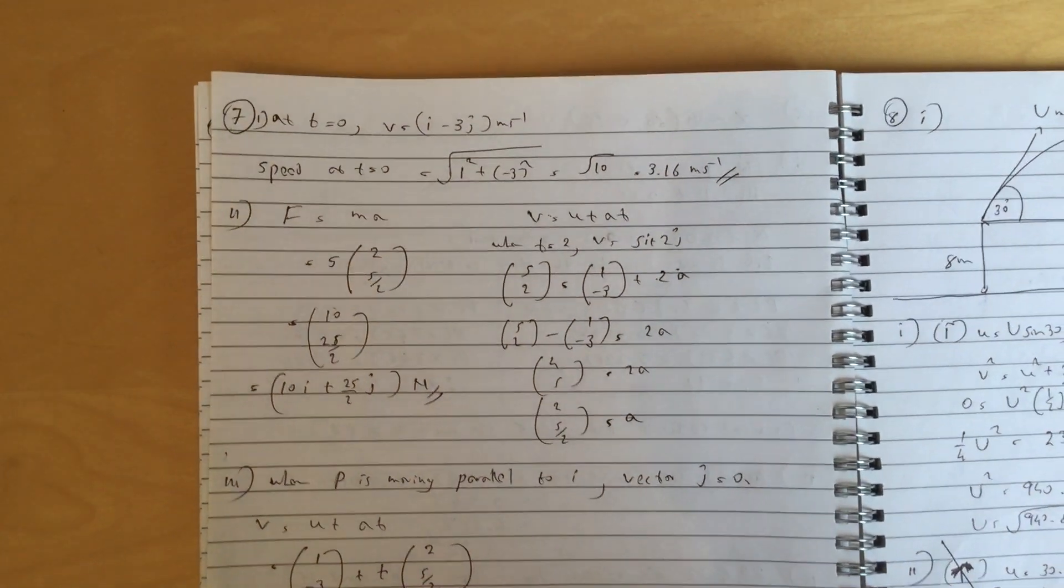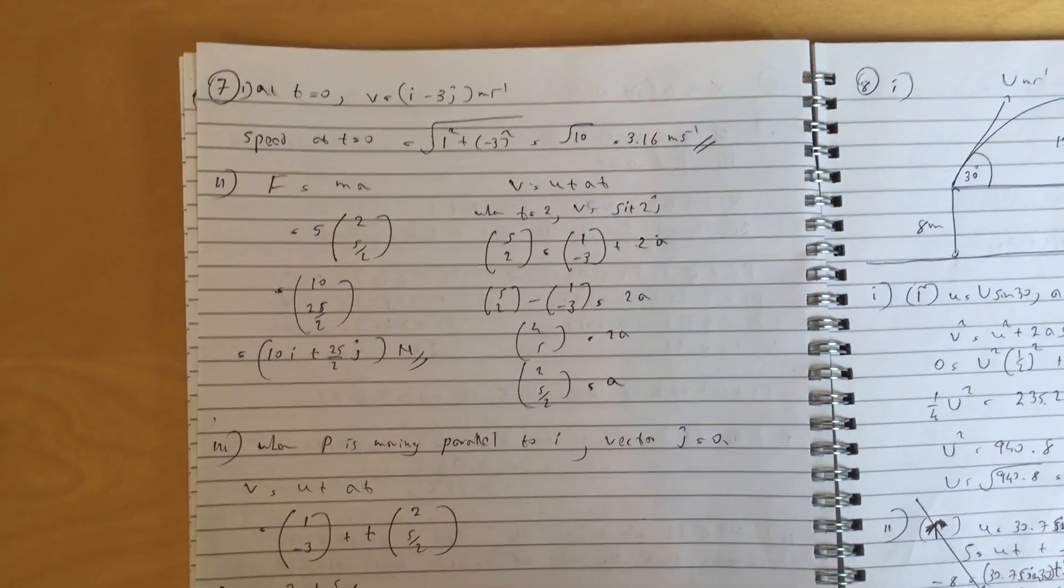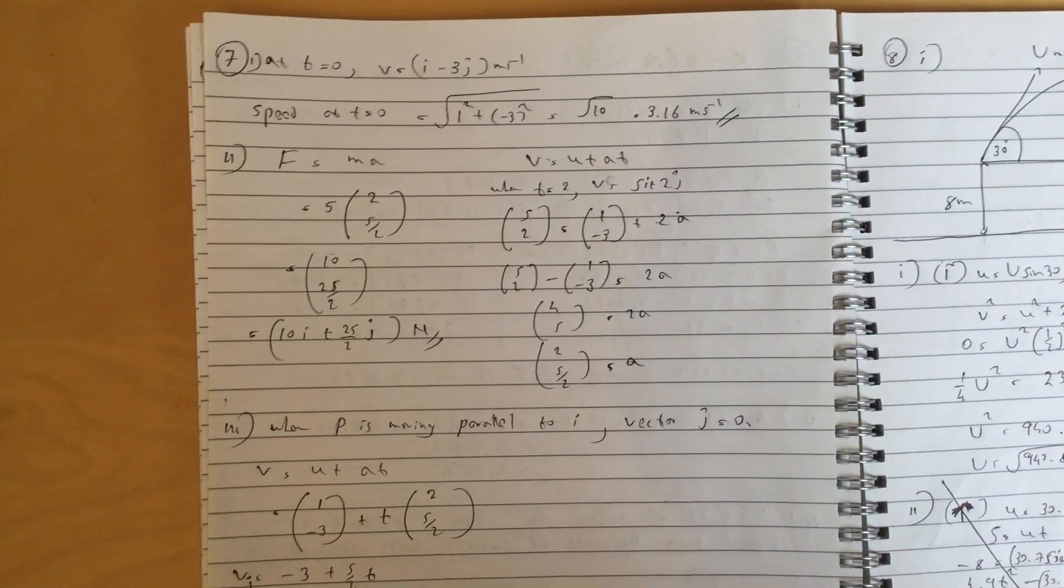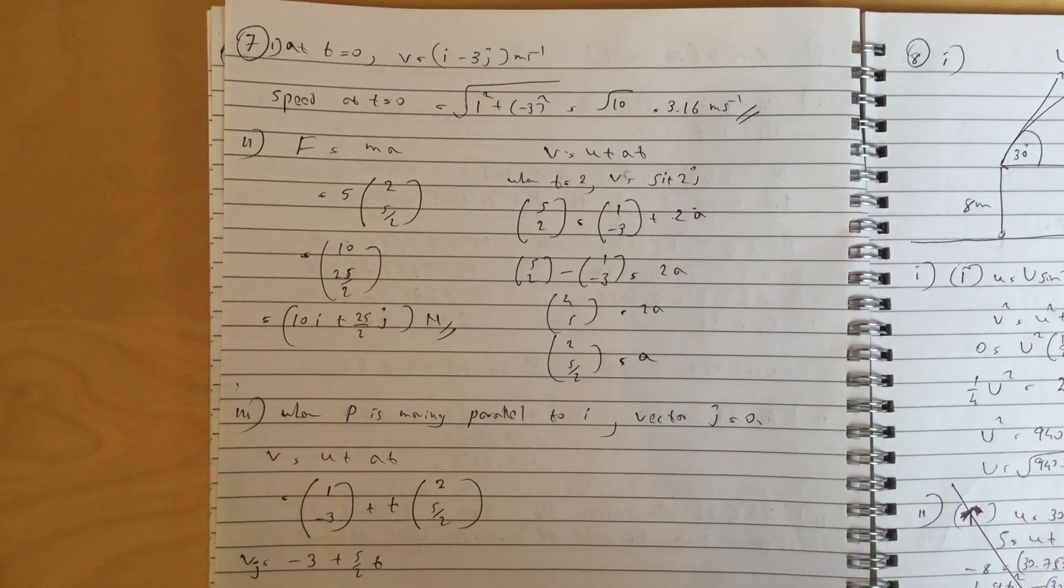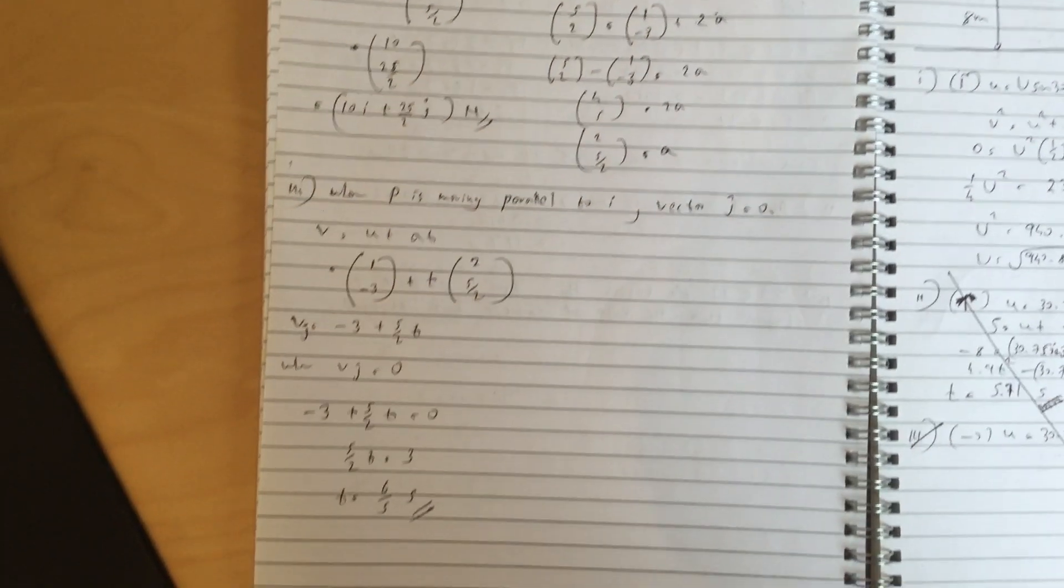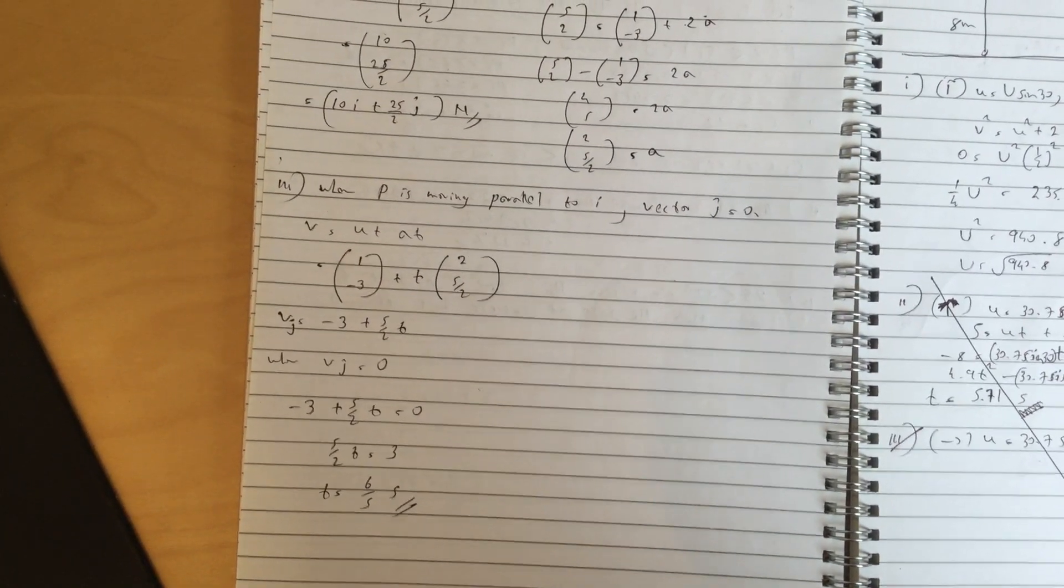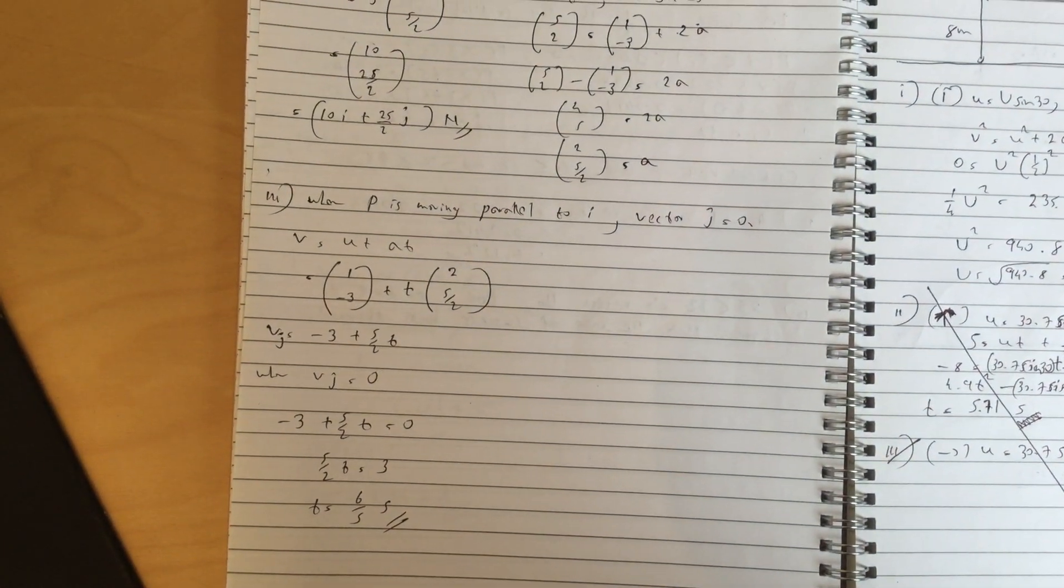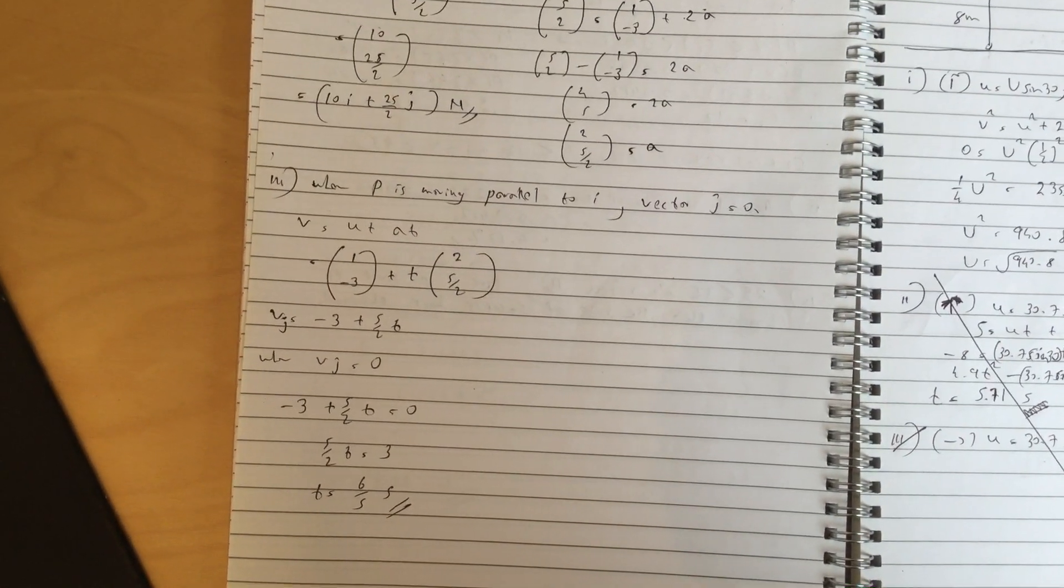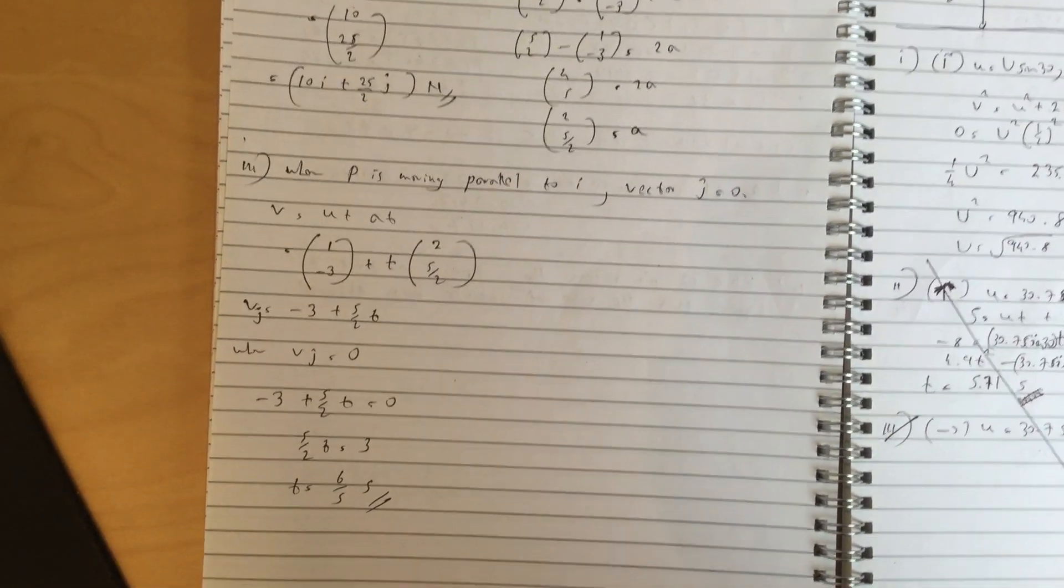So the first question, at time t equal to 0, the speed is 3.16 meters per second. Part 2, f equals 10i plus 25 over 2j. Part 3, so you get the velocity vector and then you get the j part of that, which is minus 3 plus 5 over 2t, and when i equals 0, t is equal to 6 over 5 seconds.